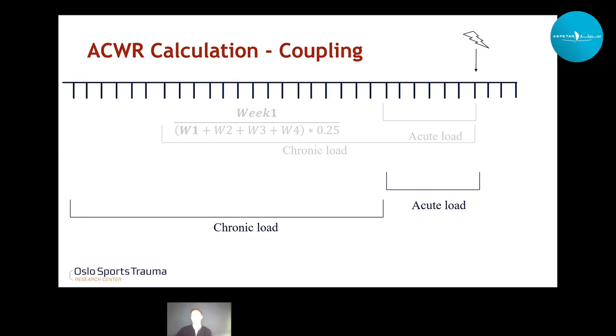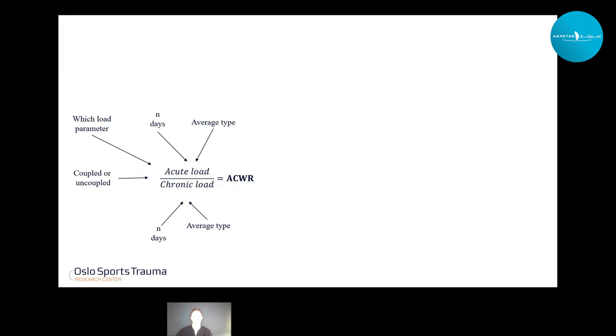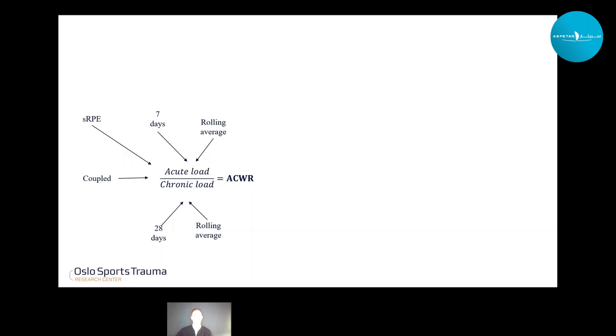There are also studies that have analyzed it separately — meaning the current week is defined as the acute load, whereas the chronic load goes from week two through five. Let's say we have decided on all of this: we chose session RPE as the load parameter, a seven-to-28-day rolling average, and a coupled ACWR. So far so good — then we can make a ratio.